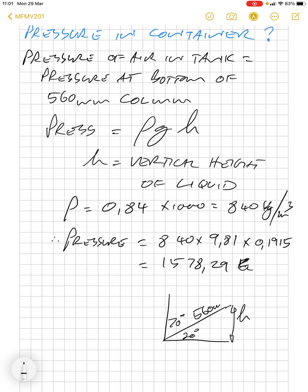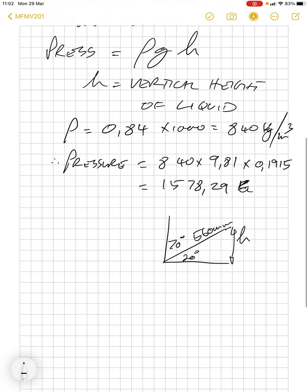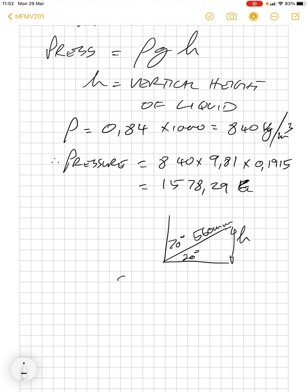This is 560 millimeters. Then we can work out that the sine of 20 degrees is equal to h over 560, which is opposite over hypotenuse.